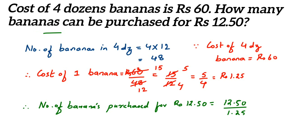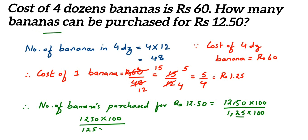We have a decimal point in the numerator and in the denominator, so we're going to remove them. Remove the decimal from the numerator — there are two digits after it, which means we multiply by 100 in the denominator. Similarly, remove the decimal from the denominator — there are two digits, so multiply by 100 in the numerator. So we have 1250 multiplied by 100 over 125 multiplied by 100. The 100s cancel, leaving 1250 over 125, and 125 into 10 is 1250, so the answer is 10.